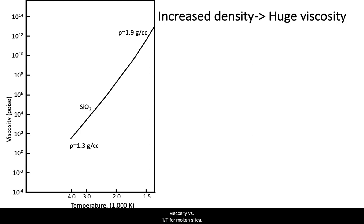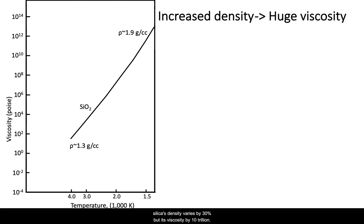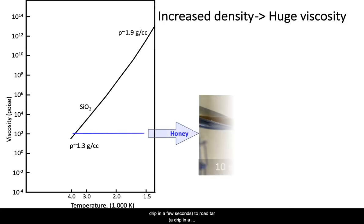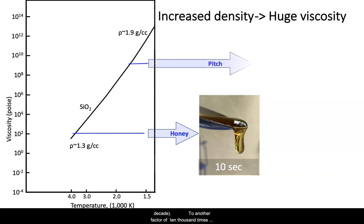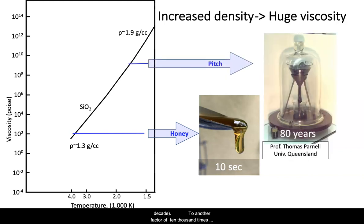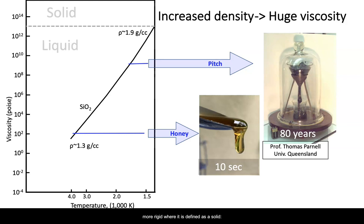I show here a log-log plot of viscosity versus 1/T for molten silica, with its density noted at the ends. You can see that over a factor of 3 in temperature, silica's density varies by 30%, but its viscosity varies by 10 trillion — from the thickness of honey, a drip in a few seconds, to that of road tar, a drip in a decade, to another factor of 10,000 times more rigid, where it's defined as a solid at 10 to the 13th poise.